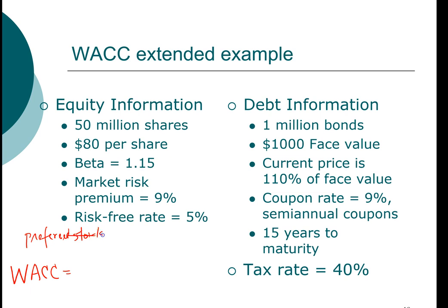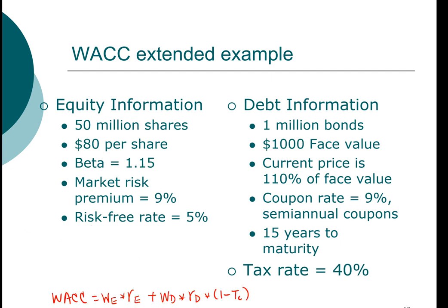What that means is we need to compute the weight of equity times the cost of equity, plus the weight of debt times the cost of debt, and subtract one minus the tax rate to get the after-tax cost of debt. To find the weighted average cost of capital for this particular example we need to compute four different variables, because the tax rate is already given to us as 40 percent.